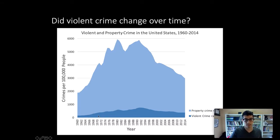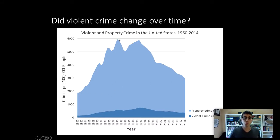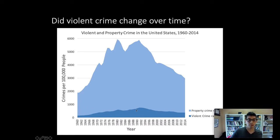In the stacked area chart, the total height communicates the total crime rate in a given year. The height of the bottom area communicates the violent crime rate in any given year. The color coding helps distinguish — violent crime is at the bottom, property crime is at the top.